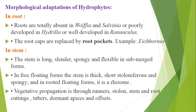Next: stem. The stem is long, cylindrical, spongy and flexible in submerged forms. In free-floating forms, the stem is thick, short, stoloniferous and spongy. And in rooted floating forms, it is a rhizome.